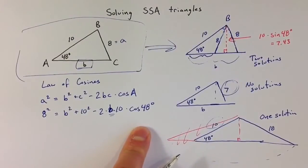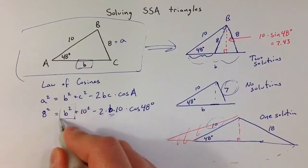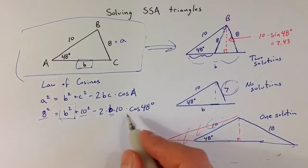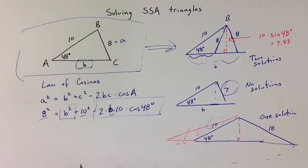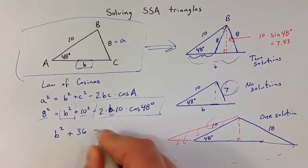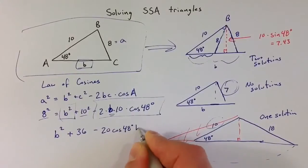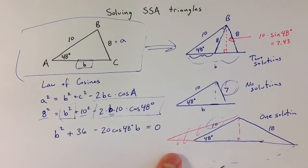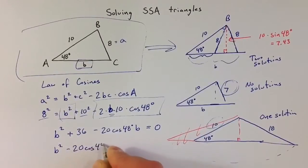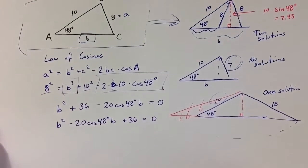And so essentially what we have here is a quadratic equation, where I have a b² term, I have some constant terms, and I have a b term. So let me rewrite that in the more usual form. I have b², 8² is 64, 10² is 100. If I subtract those, I get a positive 36. And then in front of the b term, I have a negative 20·cos(48°)·b. And since I moved everything to one side, I can set that equal to zero. Of course, it's more usual for us to say b² - 20·cos(48°)·b + 36 = 0, putting the terms in descending order.